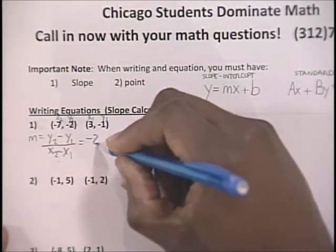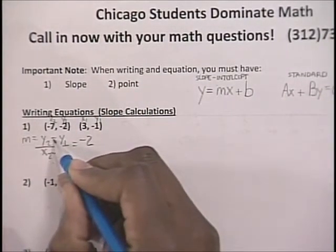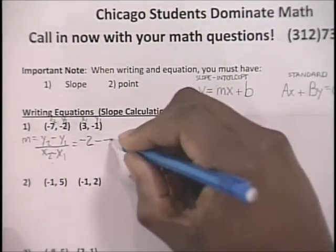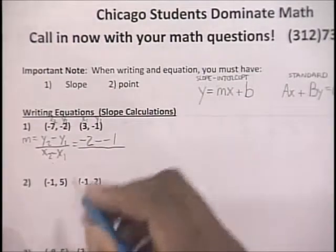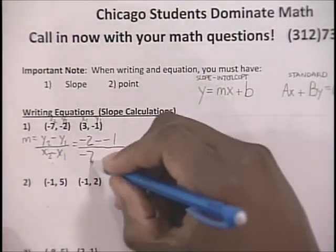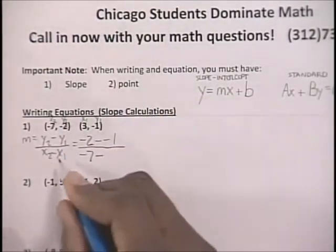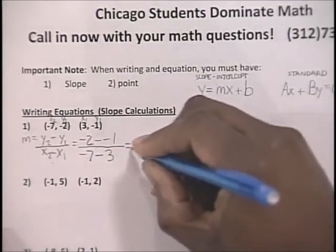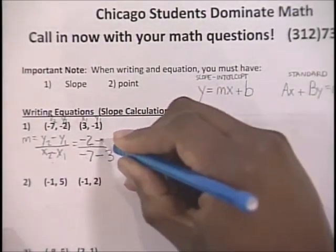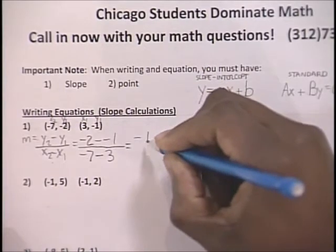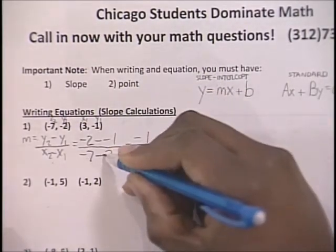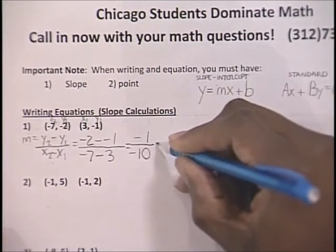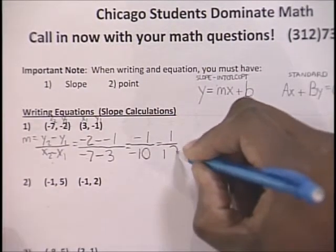Now we substitute into the slope formula. y2 is negative 2, minus y1 which is negative 1, over x2 which is negative 7, minus x1 which is 3. That gives us negative 2 minus negative 1, which is negative 1, over negative 7 minus 3 which is negative 10. The slope simplifies to 1/10.